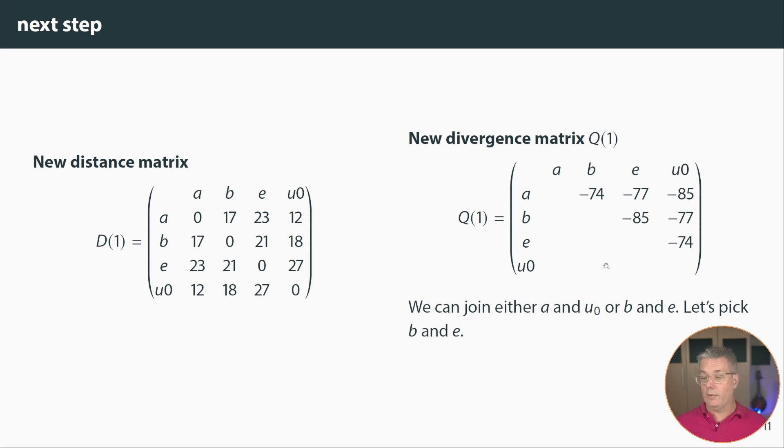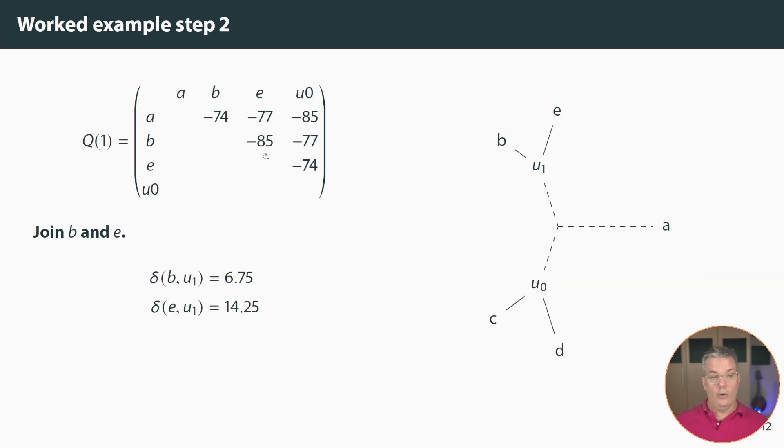We go from that so we now have this and we use that same equation to calculate the delta values and we now see 6.75 between B and this new internal node U1 and 14.25 for E and this internal node U1. So we now draw those and we now have a little bit more resolution.